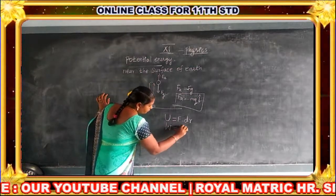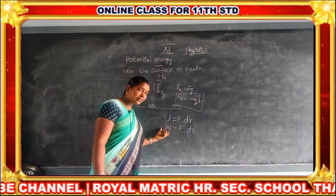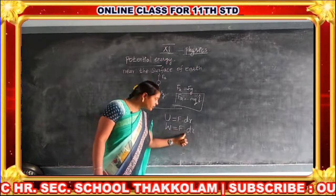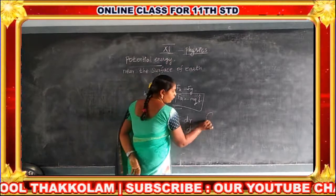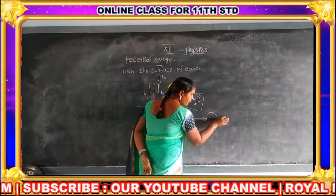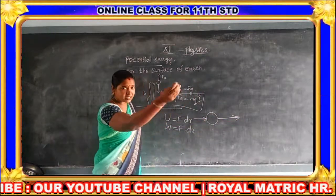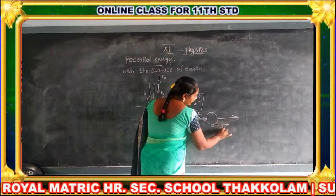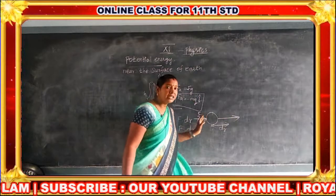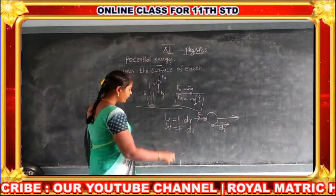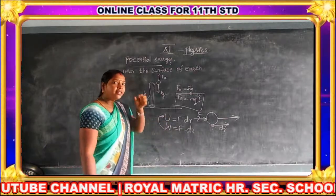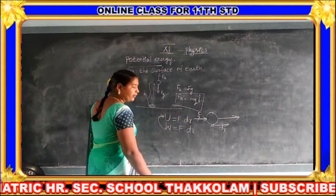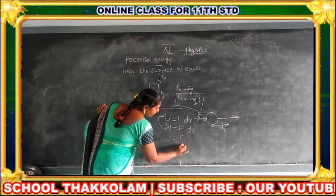W is equal to F·dr. That is the work done — force times displacement. In physics, work is done when some force causes displacement. If a ball moves, force is applied and the ball undergoes displacement. We are considering force parallel to the displacement vector dr.